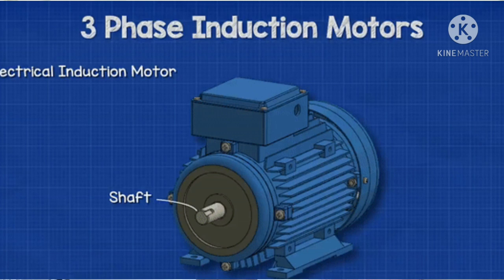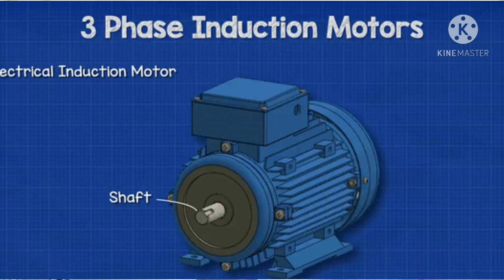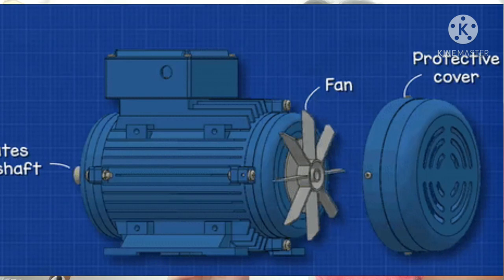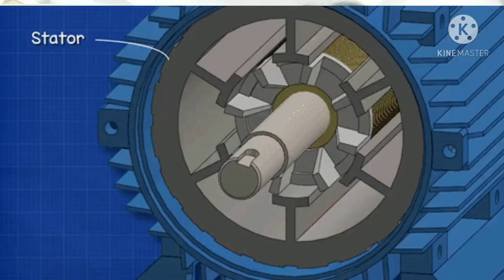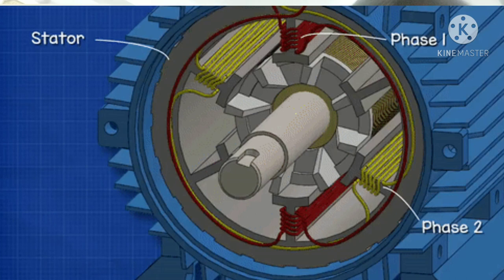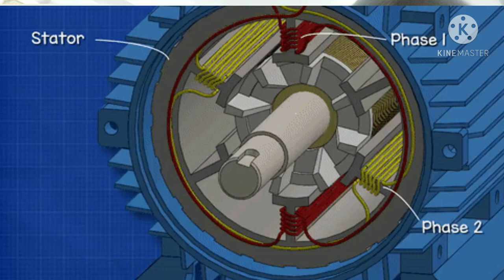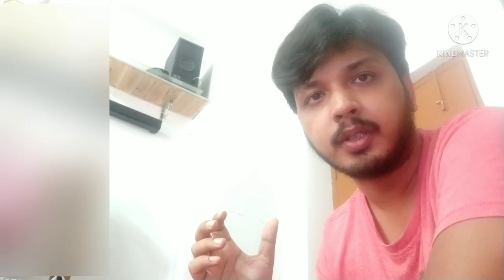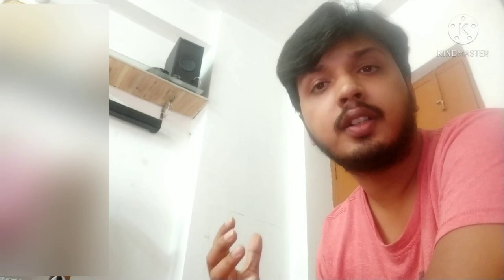The shaft is used for transmitting torque to the load and is made up of steel. We connect the load according to our requirement to this shaft. Next, bearings are used for supporting the rotating shaft. One problem with electrical motors is production of heat during rotation; to overcome this, a fan is needed for cooling. For receiving external electrical connections, a terminal box is needed. There is a small distance between the rotor and the stator, usually varying from 0.4 mm to 4 mm, called the air gap.